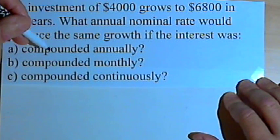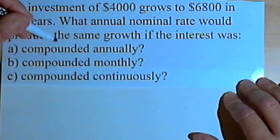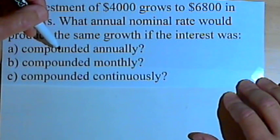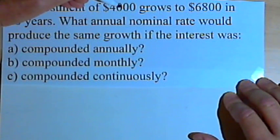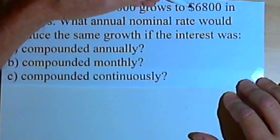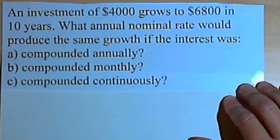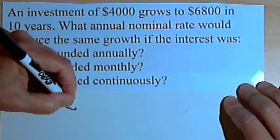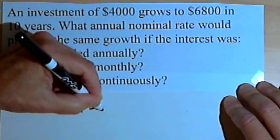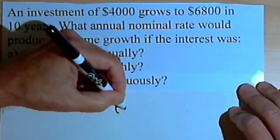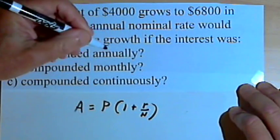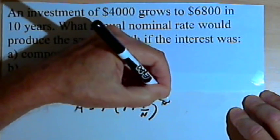Let's start with the compounded annually part of the problem. We want to find out what the interest rate would have to be if we took $4,000, compounded annually for 10 years and wanted it to grow to $6,800. The formula we have for compounded interest is A equals P times 1 plus r over n raised to the nt power.